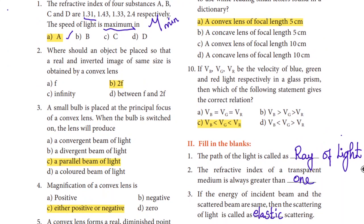Next question: Where should an object be placed so that a real and inverted image of same size is obtained by a convex lens? If you look at the textbook, when the object is placed at the center of curvature C, which is equal to twice the focal length, we get a real and inverted image of the same size. So 2F is the correct answer.